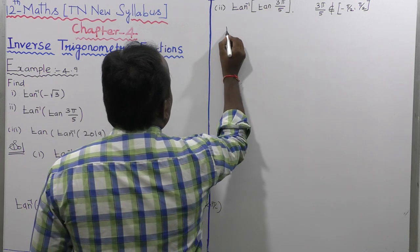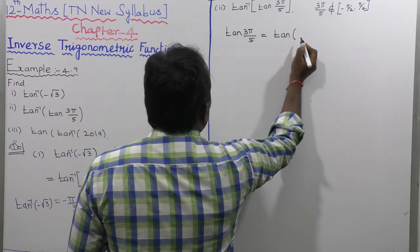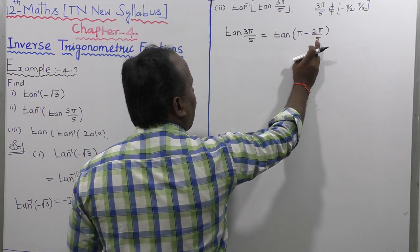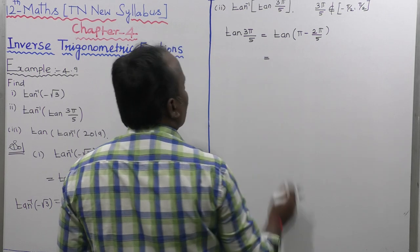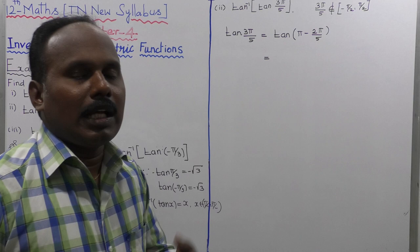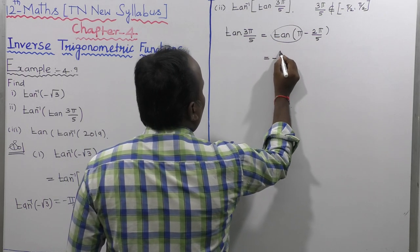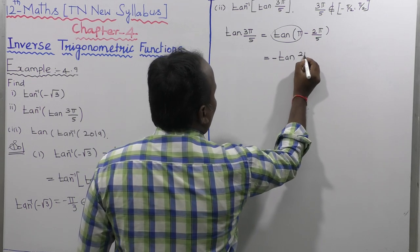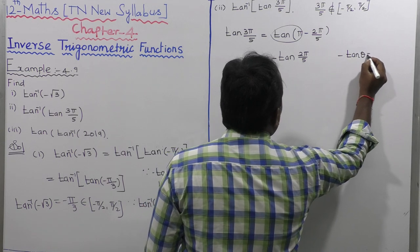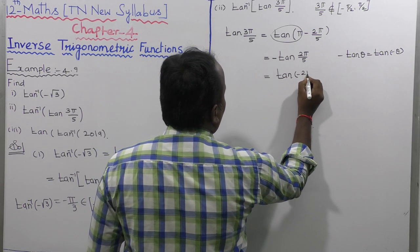We evaluate tan(3π/5) = tan(π − 2π/5). Since 3π/5 = (5π − 2π)/5, and using the identity tan(π − θ) in the second quadrant, where sin is positive but tan is negative, we get tan(π − 2π/5) = minus tan(2π/5). Therefore tan(3π/5) = minus tan(2π/5) = tan(−2π/5).